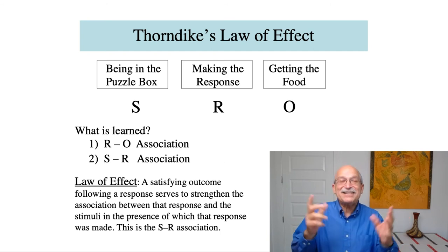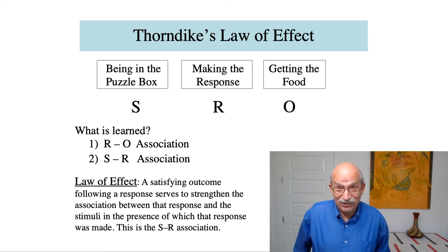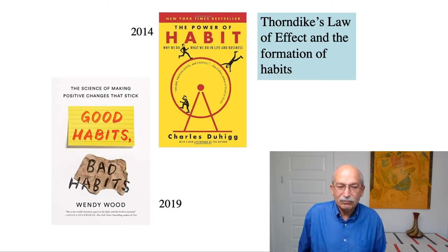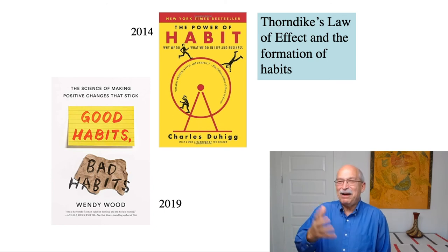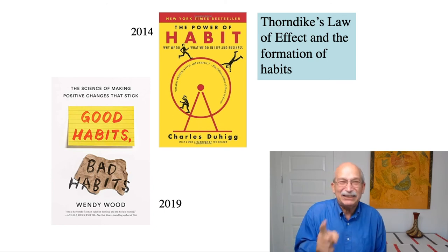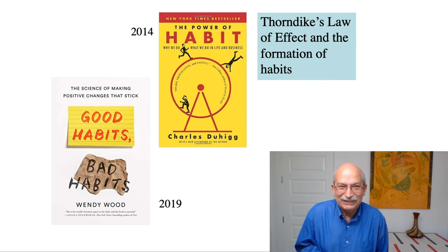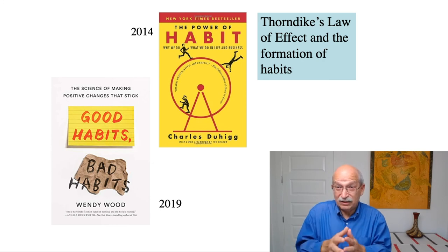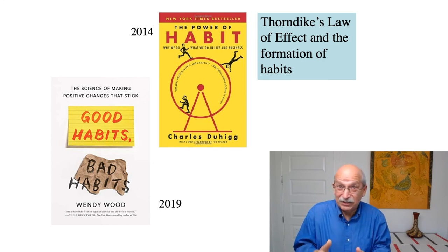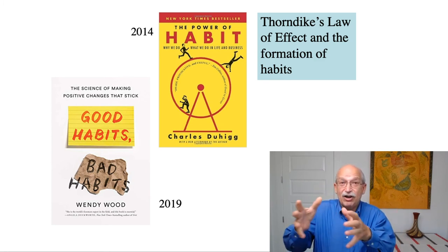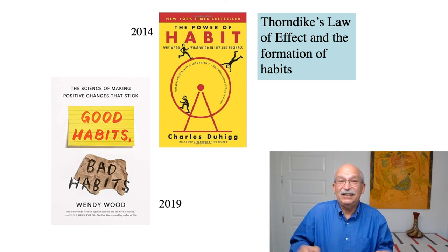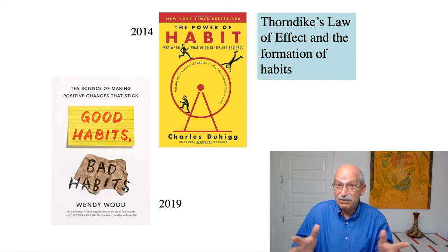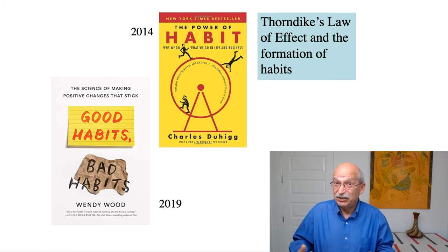Why is this so interesting more than 100 years after Thorndike talked about it? The next slide shows the covers of two books published in recent years. The first, The Power of Habit, was written by Charles Duhigg in 2014 and became a bestseller. Duhigg was a science writer for The New York Times and wrote this book about what is responsible for habits. The book is all about the S-R-O formulation that Thorndike proposed and the importance of the S-R association.